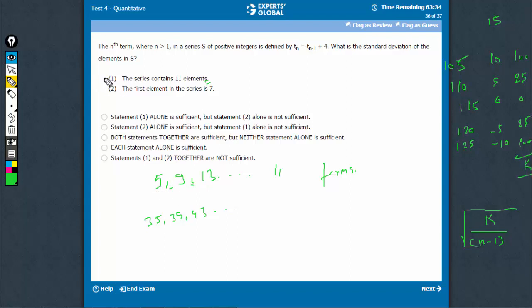So, statement 1 is very much sufficient. Statement 2 talks about only the first element, it doesn't talk about the gap. The gap is important, the number of terms are important. Sorry, the gap is already given, the gap is 4, but it doesn't talk about the number of terms. We need the number of terms. Statement 2 is not sufficient.